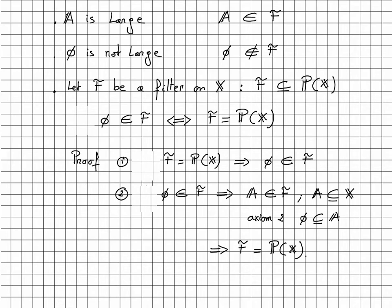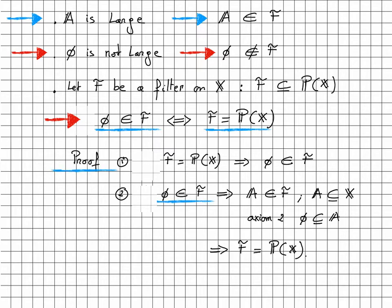So the two axioms are exactly what we need in order to satisfy the constraint that we have. It should be clear by now that 'A is large' translates into 'A belongs to F'. Another constraint we had pointed out in the previous lecture was that the empty set cannot be considered large, so the empty set cannot belong to F. In fact, we can show that the empty set belongs to F if and only if F equals the power set. If F equals the power set, then obviously the empty set belongs to F. And if the empty set belongs to F, then any set A belongs to F because of axiom 2, since the empty set is a subset of any set A — and therefore F equals the power set.